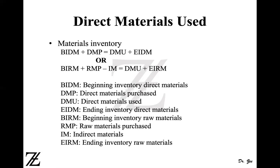This equation is used when you only have direct material and your raw material does not include any indirect material. However, in most cases you're going to have indirect material also. If that's the case, you use: beginning inventory raw material plus raw material purchases minus indirect material equals direct material used plus ending inventory raw material. Solving for DMU: BIRM plus RMP minus IM minus EIRM gives you DMU — direct material used.